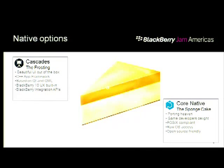Cascades and core native are really part of one NDK. Today I'll be talking about the NDK as a whole. Cascades is like the frosting — it's a UI framework built on top of the core. The core native layer is POSIX-compliant and supports many open APIs that game developers want to use. There are situations where APIs aren't in the Cascades layer, and you may need to go down to core native.